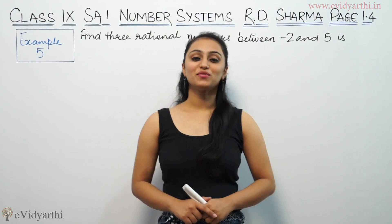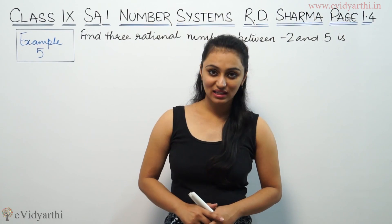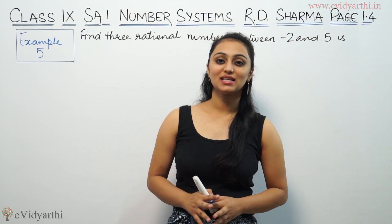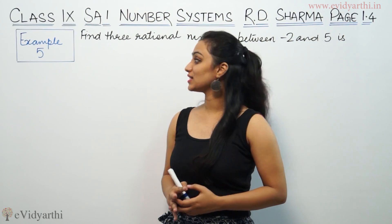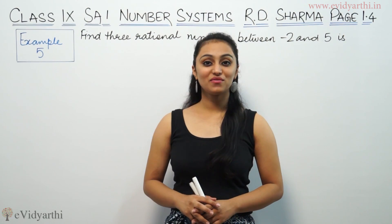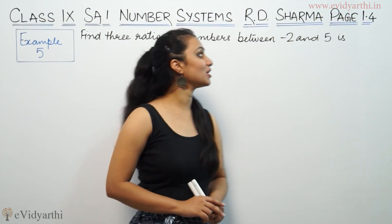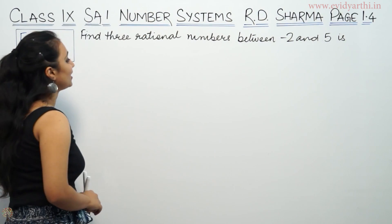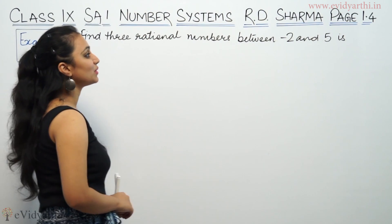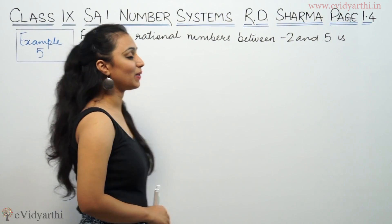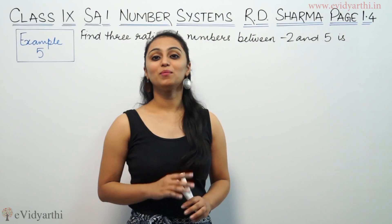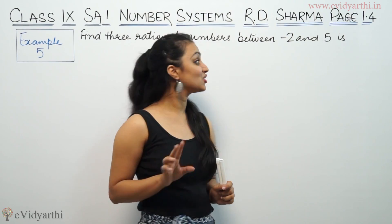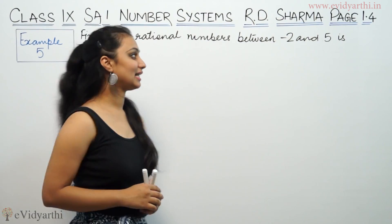Hi, this is Krishku with the first question of Adi Sharma. We are already done with NCAD questions. This is example number 5 from page number 1.4. It says find rational numbers between minus 2 and 5, so we have minus 2 and 5 and we need to find 3 rational numbers.